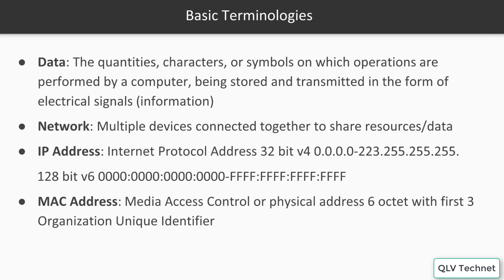IP Address stands for Internet Protocol Address. Version 4 is 32 bits with 4 octets, starting at 0.0.0.0 all the way up to 255.255.255.255. Since so many devices have started connecting to the internet, people were worried we were going to run out of addresses.